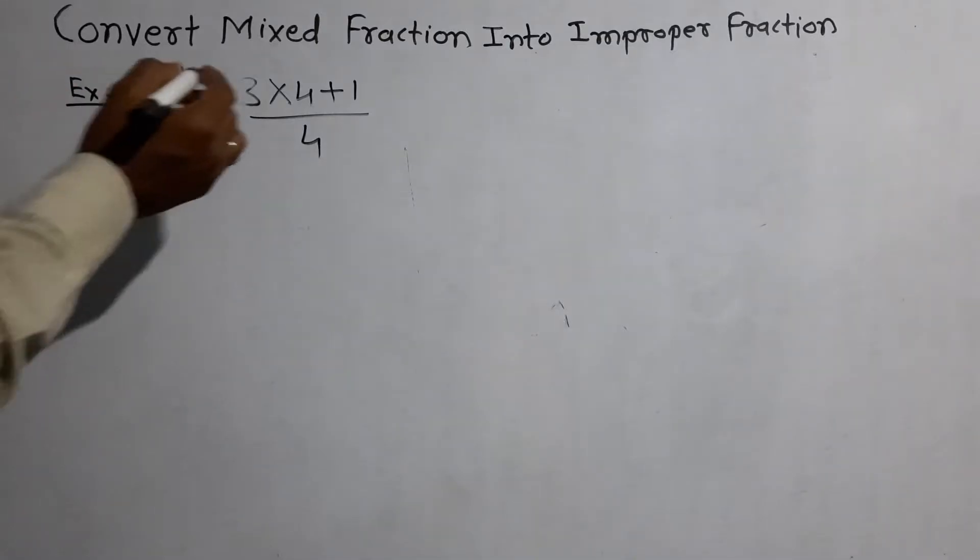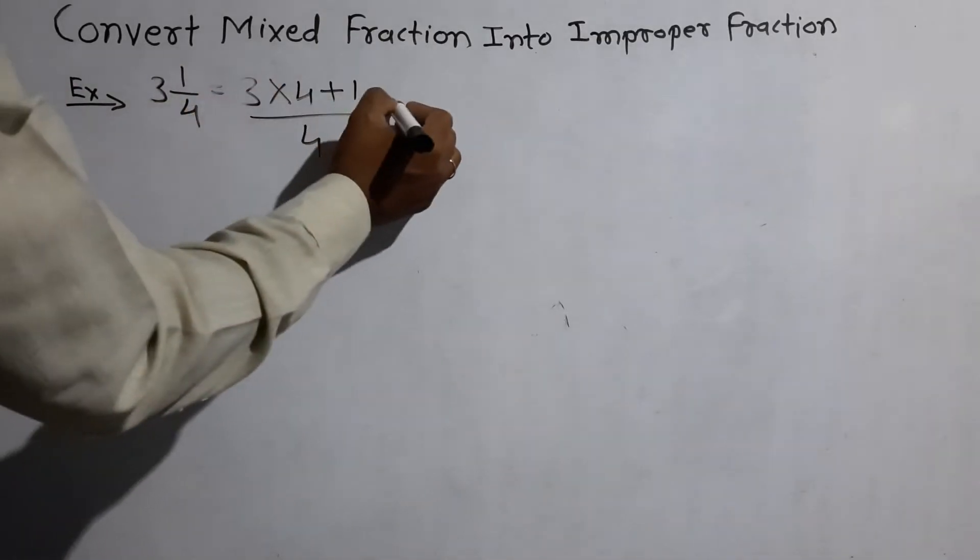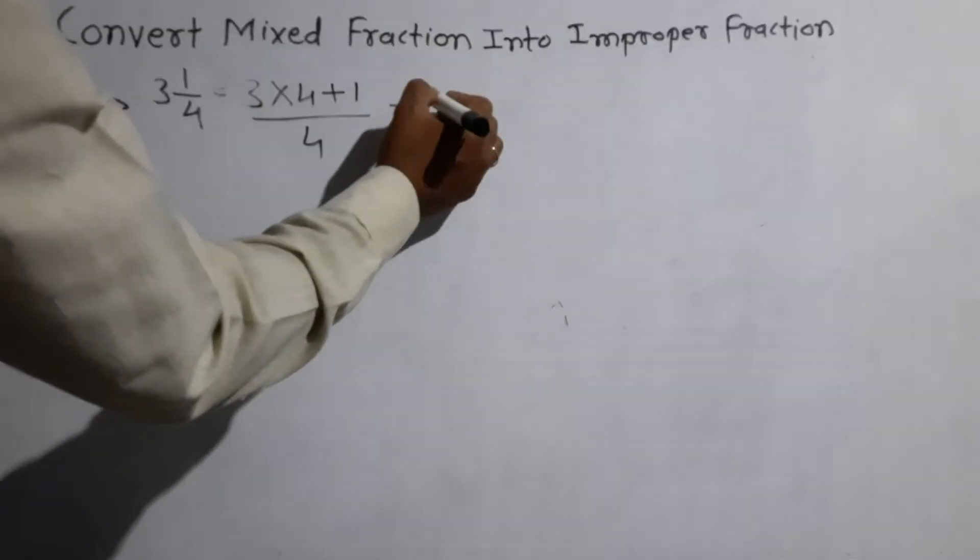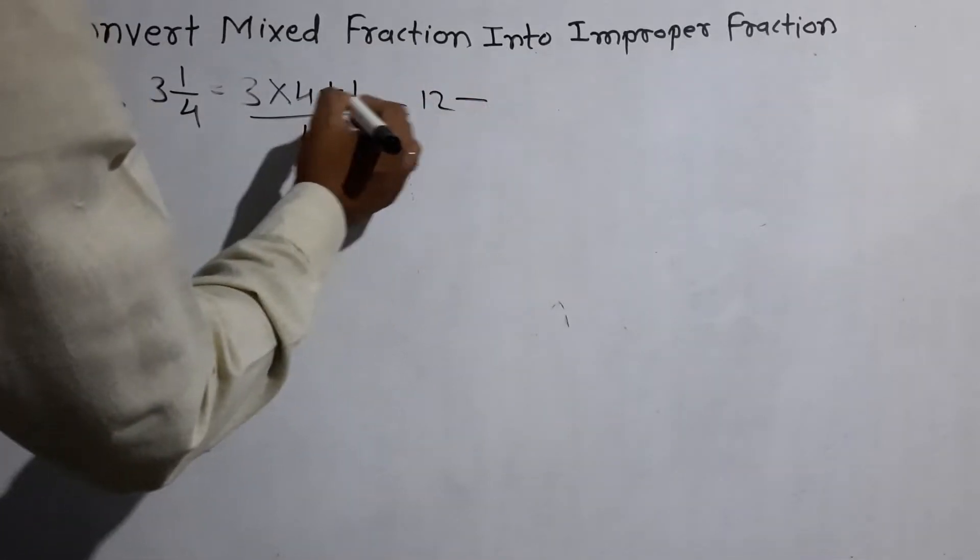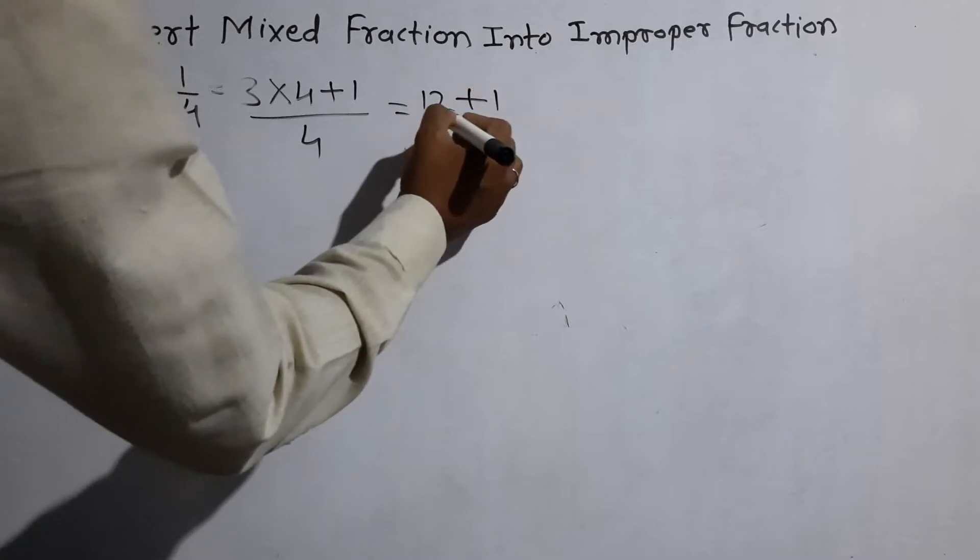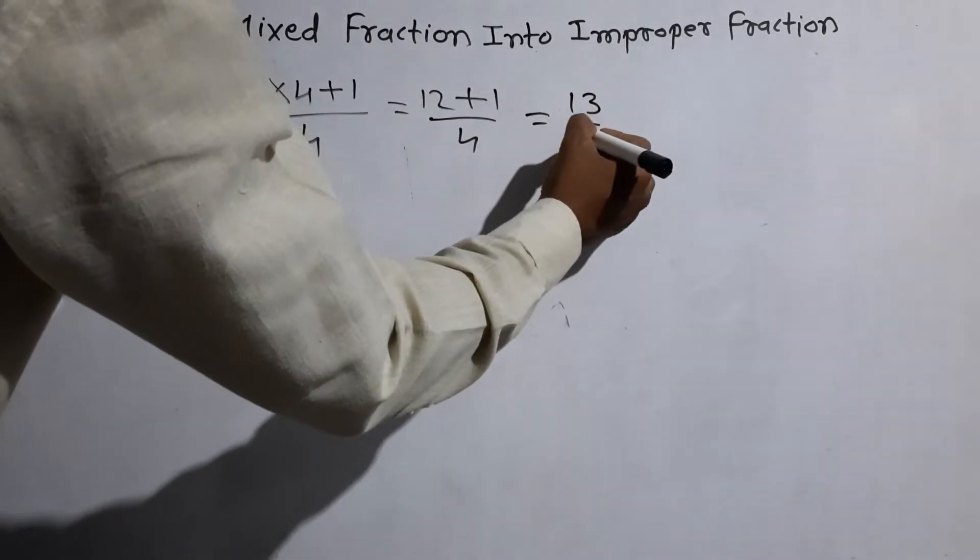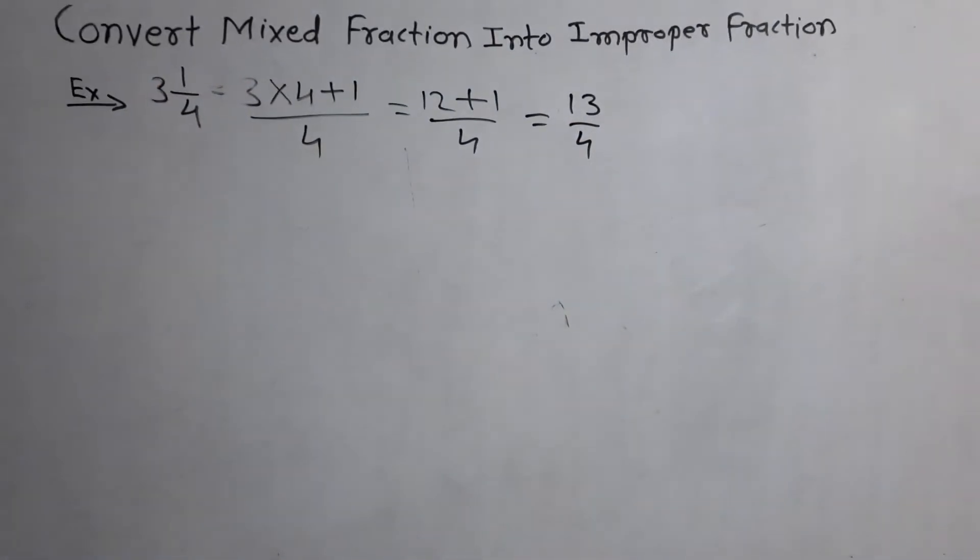First multiply 3 and 4 is equal to 3 into 4. 3 fours are 12 plus 1 by 4 is equal to 13 by 4, the improper fraction of 3 and 1 by 4.